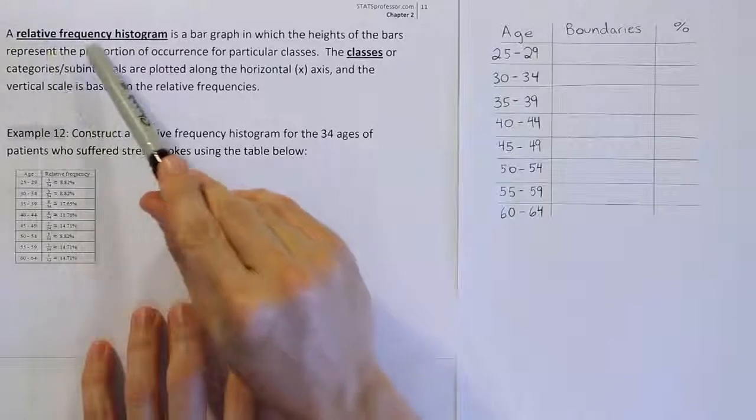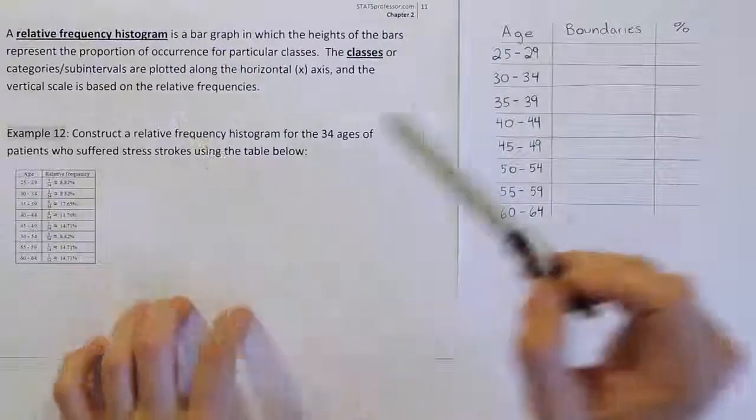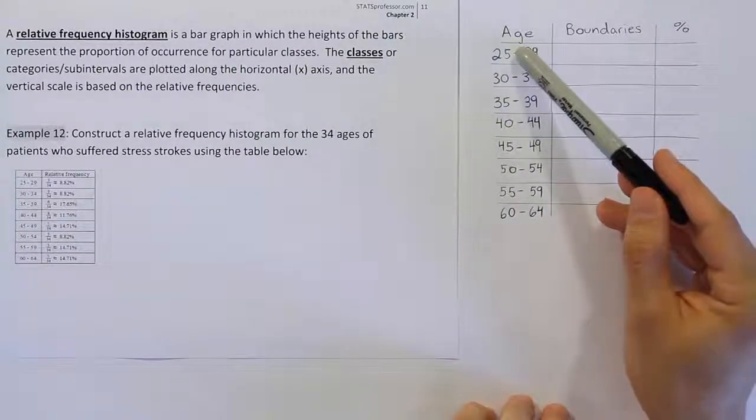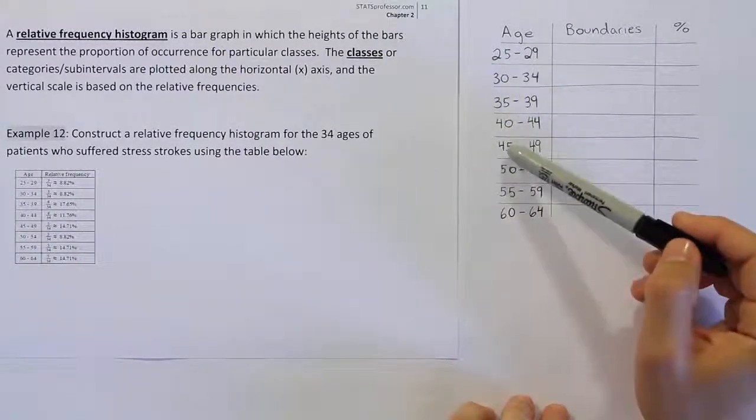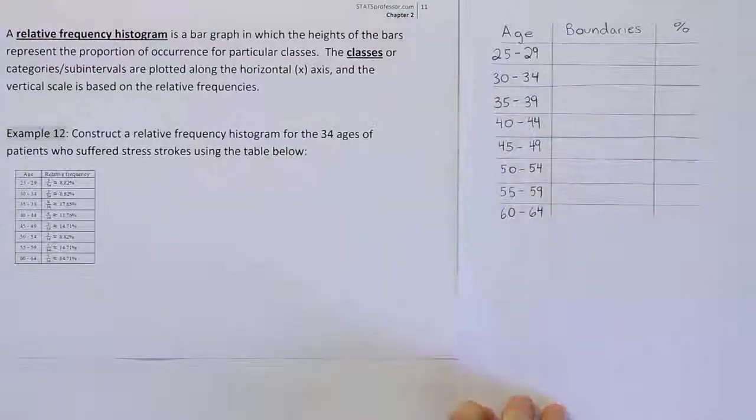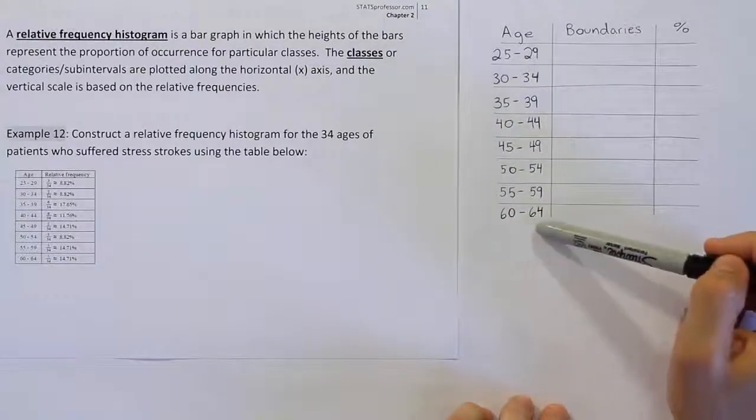Remember what a relative frequency histogram is. It's basically like a bar chart, and we're going to create a bar on our chart for each of these given categories. So each of these categories is going to have a bar. There are eight categories, so there'll be eight bars in our drawing.